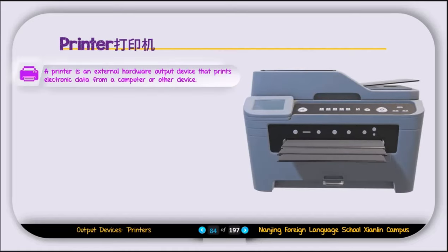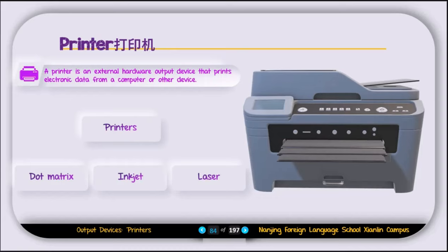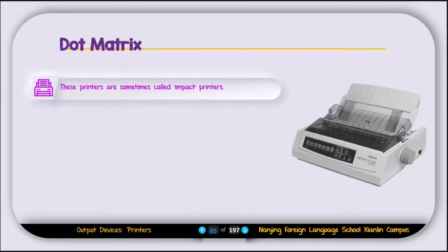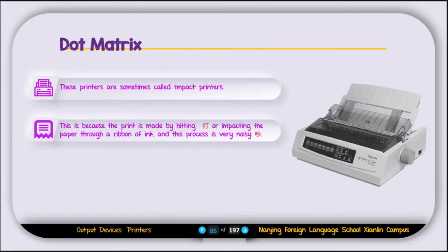The next output device is the printer. A printer is an external hardware output device that prints electronic data from a computer or other devices. There are three types of printers: the dot matrix printer, the inkjet printer, and the laser printer. The dot matrix printer is sometimes called an impact printer because the print is made by hitting or impacting the paper through a ribbon of ink.